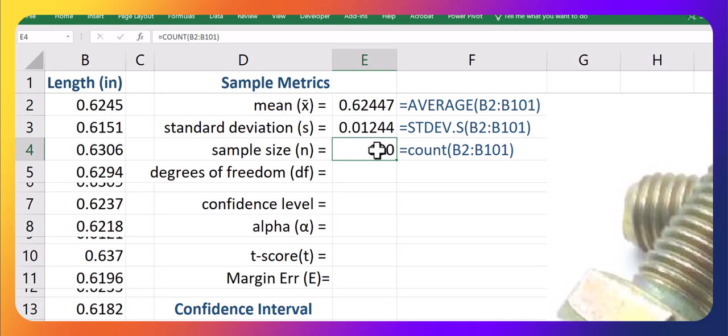And again, we've sampled 100 of them. You can also just calculate that with a count call on all your data.